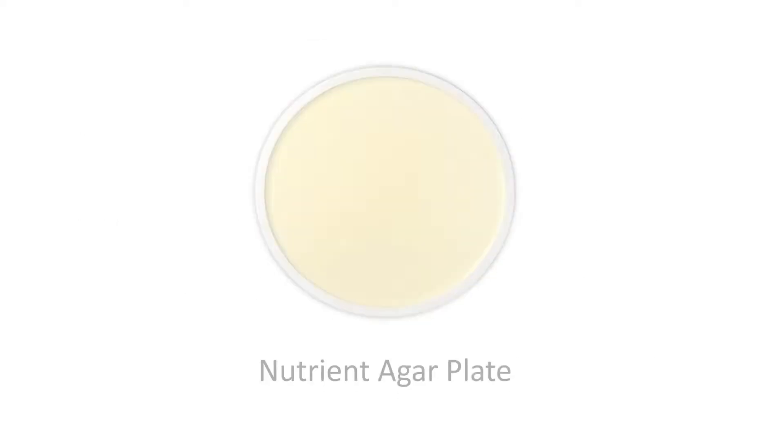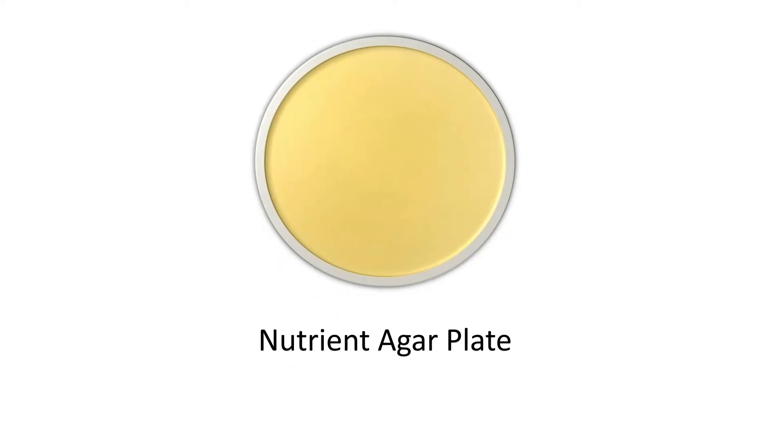First, take a sterile and dry nutrient agar plate and draw a letter capital T on the back side of the agar plate. Now the plate is divided into three areas. Label these areas as area 1, area 2, and area 3.